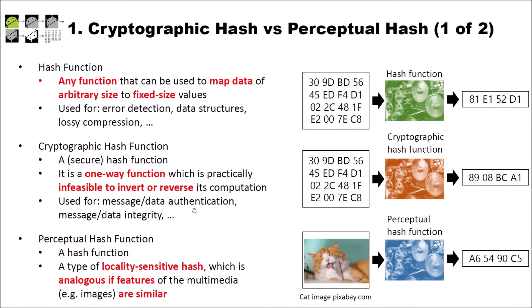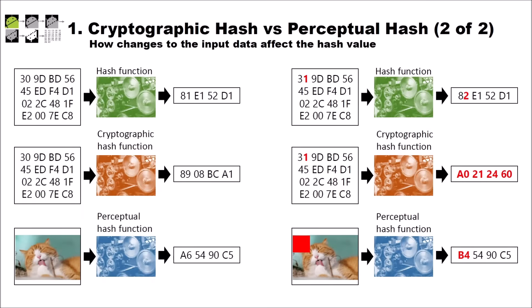Now let's come to perceptual hash functions. A perceptual hash function is also a hash function, but it's a type of locality-sensitive hash which is analogous when features of multimedia — for instance images — are similar. So instead of just giving binary data to our perceptual hash function, we give an image to the hash function, and it also returns a hash value. But when you change things or pixels in the image, the hash does not change much.